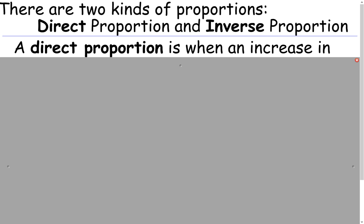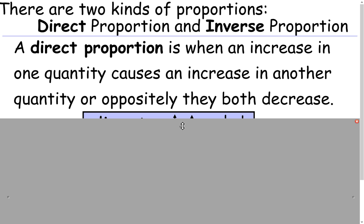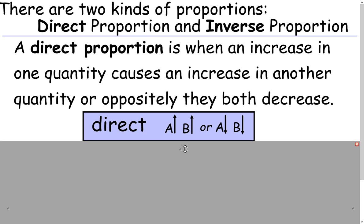The two different kinds of proportions are direct and inverse proportions. A direct proportion is when an increase in one quantity causes an increase in another quantity, or oppositely, they both decrease. This would be what it looks like: if A goes up, B goes up, or if A goes down, B goes down.